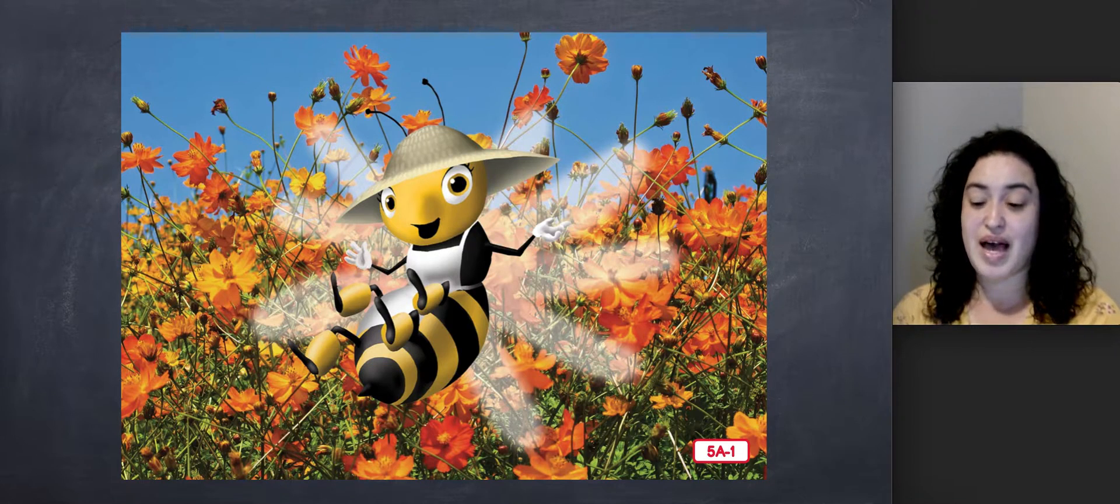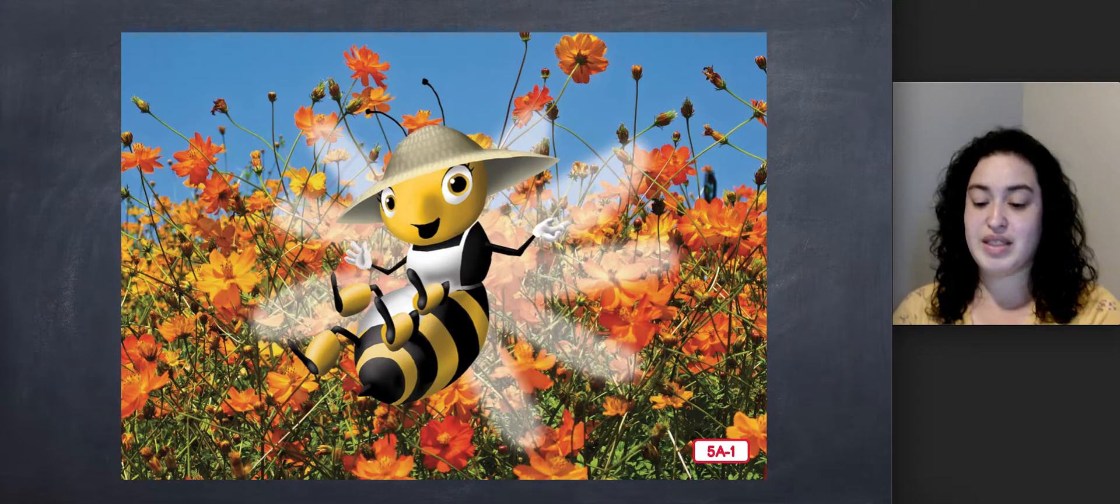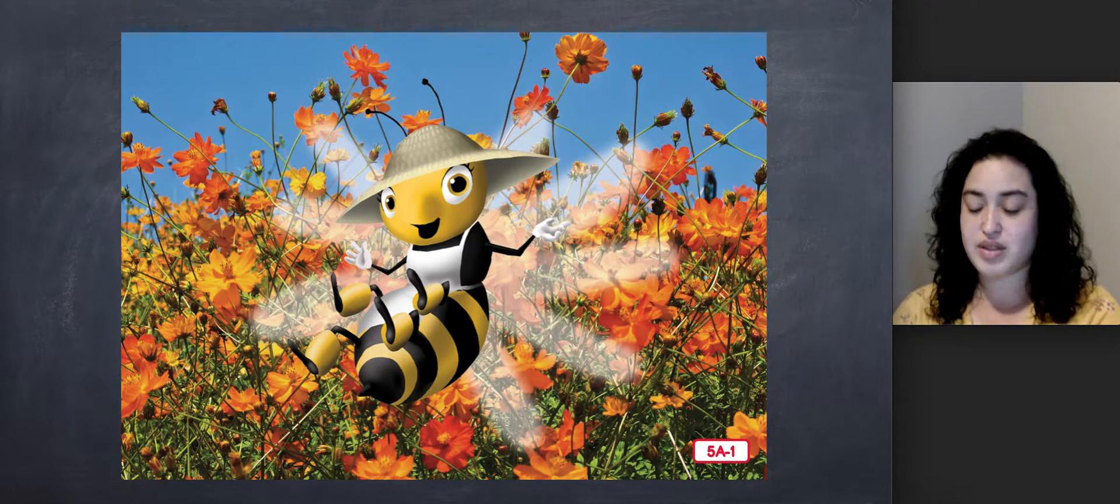A meadow is a flat area of land that is usually covered with grass and flowers. Your teacher asked me to come here today to tell you more about flowers, my favorite part of plants.